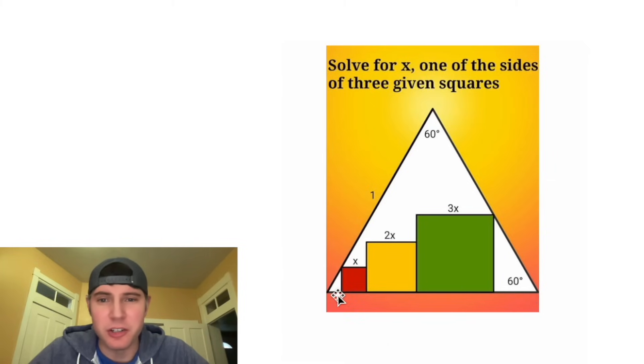All three of these are squares. So we know that if this is X, this is also X. If this is 2X, this is also 2X. And if this is 3X, this is also 3X. So now we just gotta figure out this portion and this portion.